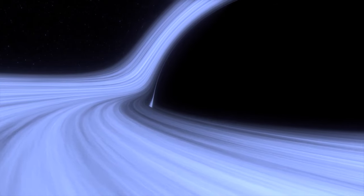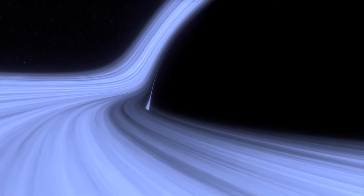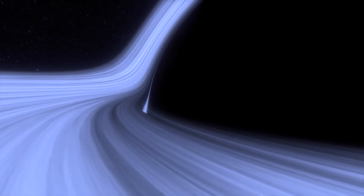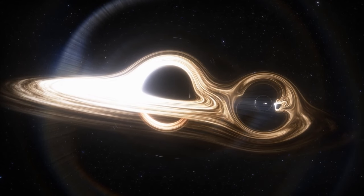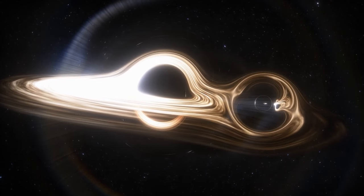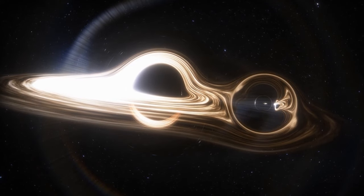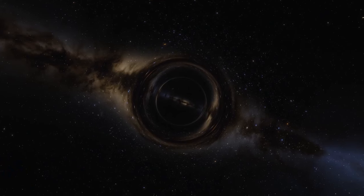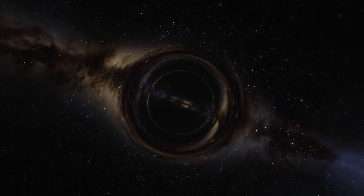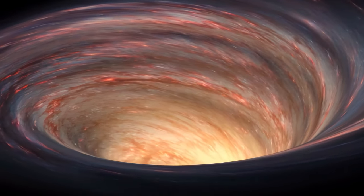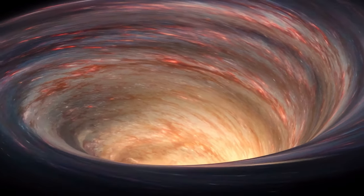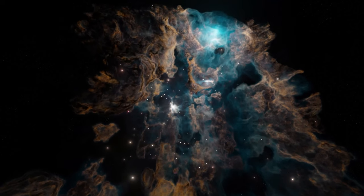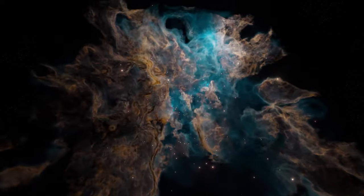This intense gravitational pull also influences the paths of stars orbiting near them. Observations of stars at the center of our Milky Way have provided indirect evidence of the presence of a supermassive black hole named Sagittarius A*. These stars whip around at such high velocities that only the presence of a massive dense object like a supermassive black hole could cause such behavior. Yet for all their might and influence, supermassive black holes remain enigmatic. Their event horizons are shrouded in mystery, beyond which our current understanding of physics breaks down. Within this boundary, all known laws of nature become unpredictable. It's a realm where our current understanding of space and time no longer applies, a true frontier of human knowledge.